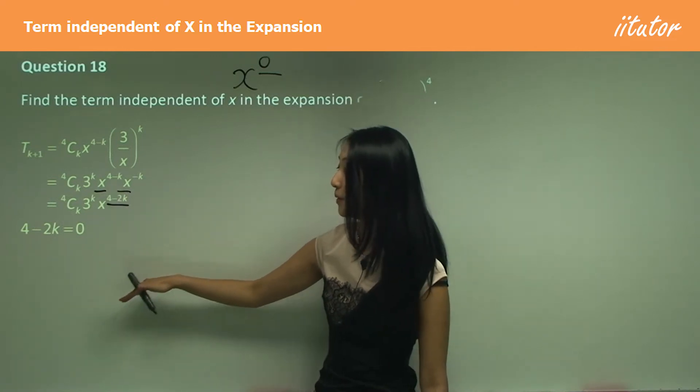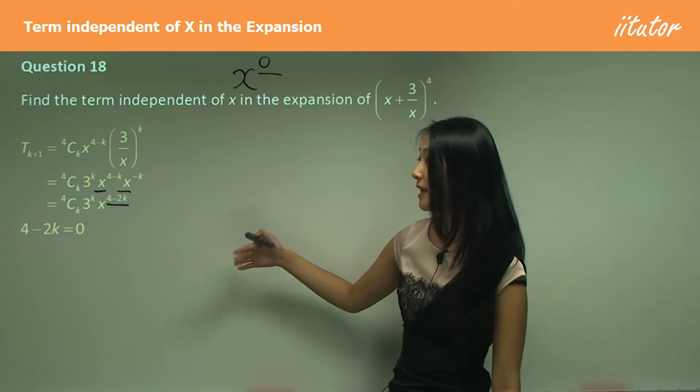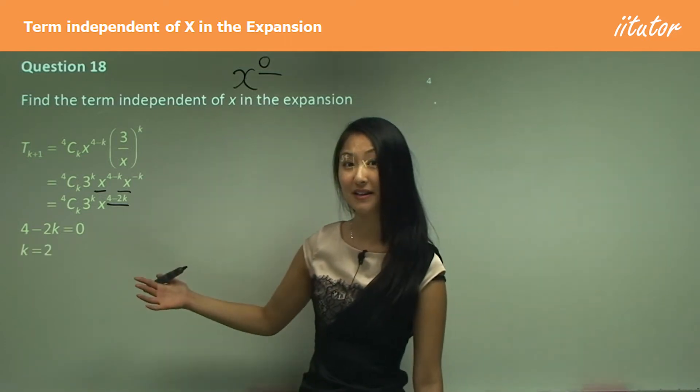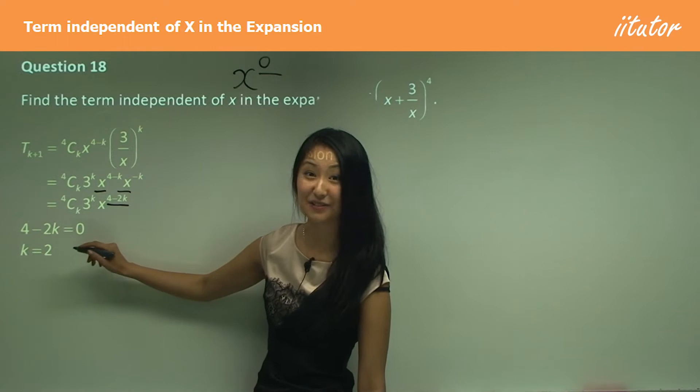We need to equate with that 0 because term independent of x means 4 - 2k has to equal 0, so there is no x. Move the 2k over: 4 equals 2k, divide both sides by 2, and you get k equals 2.